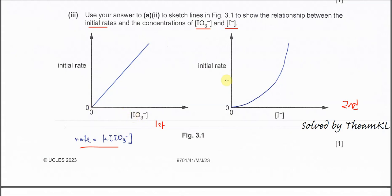For the second-order species, when the concentration of iodide is doubled, the rate increases by a factor of four. So it is not a straight line — it is a curve, an exponential relationship.